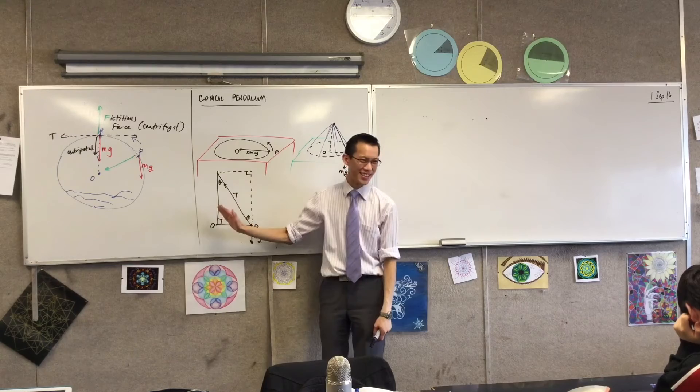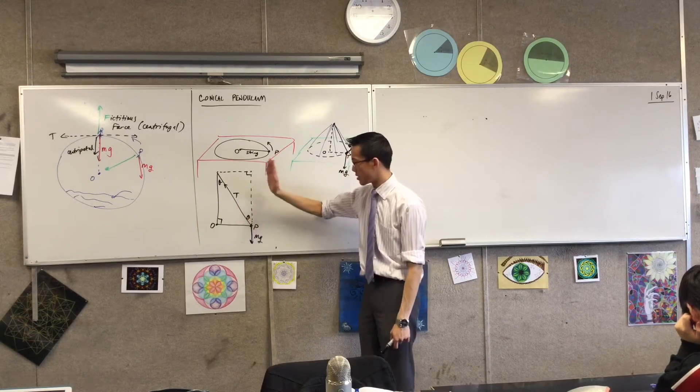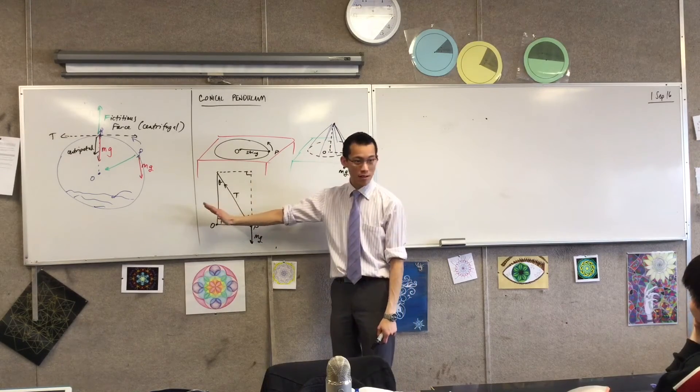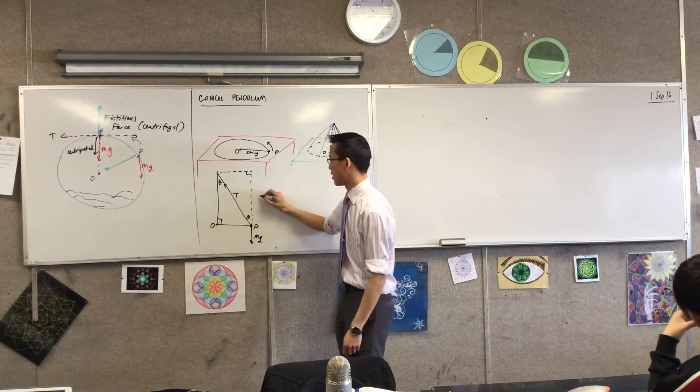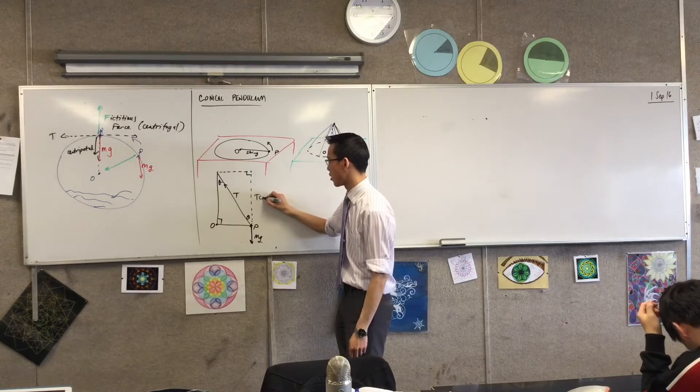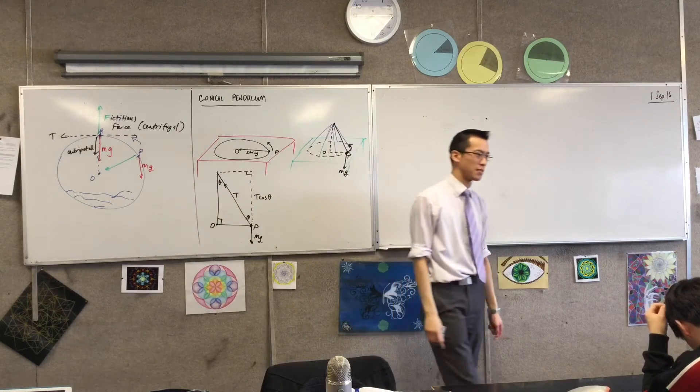And the tension is hypotenuse. So cos theta is this on this, right? The vertical component on that. So if I just want the vertical component, then that's going to be T cos theta. I'll just multiply both sides by T. Is that okay?